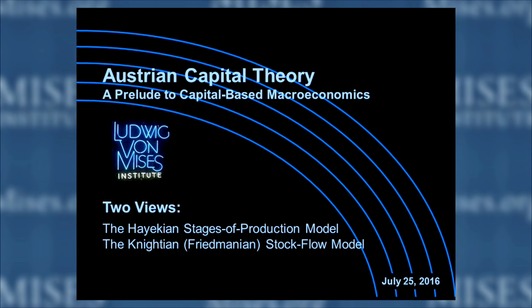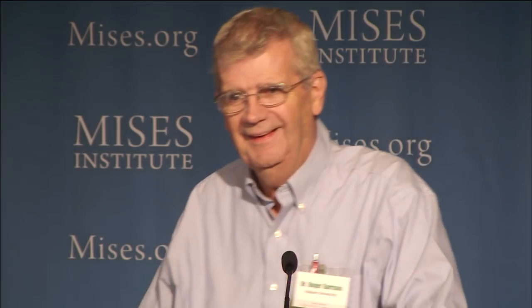I could have put a third view in — the Keynesian view, it's an animal spirits model. That doesn't quite pass muster as a model, actually. But if you've read the General Theory, it turns out that over a span of a page and a half, he used the term 'animal spirits' to give you an idea of movements of investment — whether investment is picking up or slowing down — and it's all driven by what he calls animal spirits. That doesn't fit very analytically into a macro model, but we'll have something to say about that too.